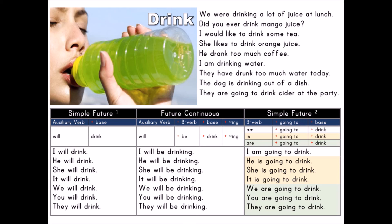Simple Future 2. Be verb plus going to plus base. Be verb: am, is, are. Going to — plan. Base: drink.